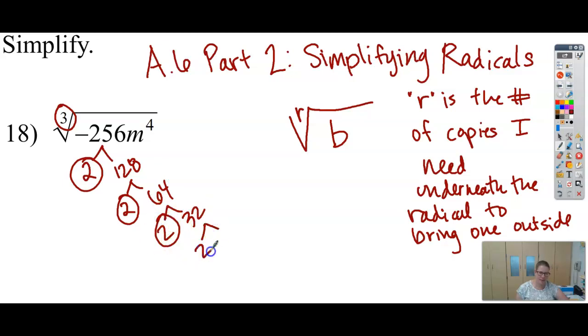2 times 16, 4 times 4, which each of those gives me a 2 times 2, right? So now I've broken it all down to its prime factors. Now I'm looking for copies.